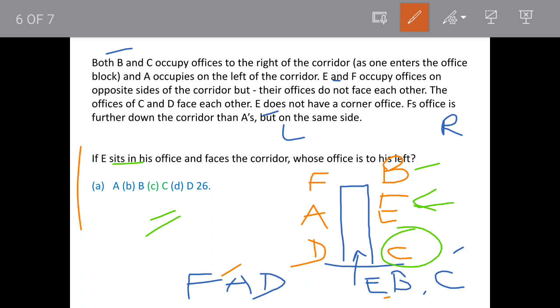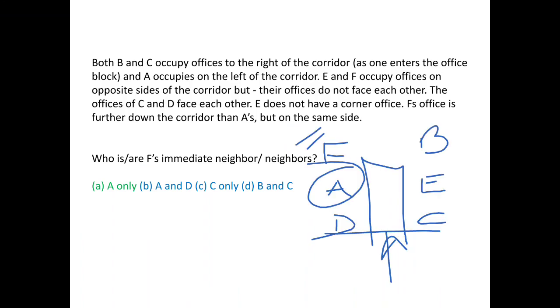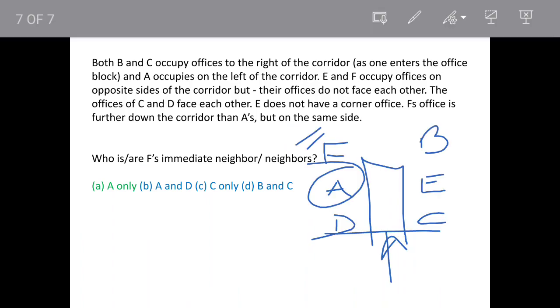Now we will see the next part. We have the information available with us, the office plan. The question further says who are F's immediate neighbors? So F is sitting here and immediate neighbor is A. So answer is option A. Thank you.